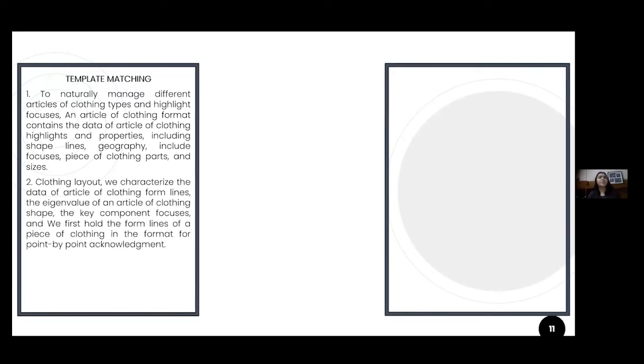We divide the garments into 6 categories, including t-shirt, shirt, pants, vest, skirt and one piece dress. For each category, a garment template is defined. The template contains highlights and properties of the garment, including shape lines, geography, focuses, pieces of clothing parts and sizes. Using these key measurements, we recognize the garment.